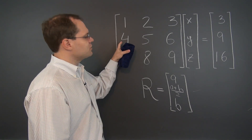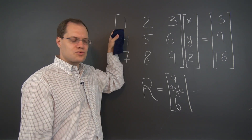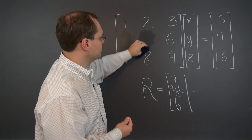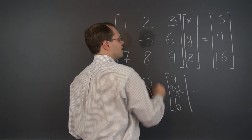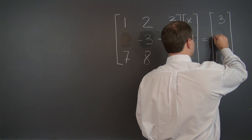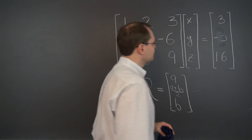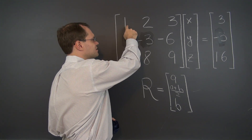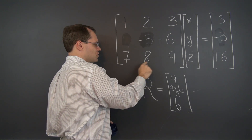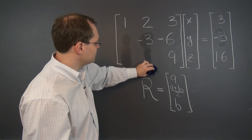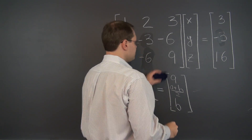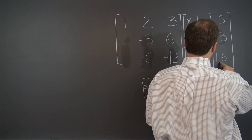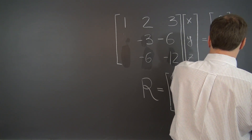Let's see what happens. The first operation is subtracting 4 of the first row from the second, resulting in 0, minus 3, and minus 6, and a minus 3 on the right-hand side. So far, so good — nothing foreboding about the system yet. The next step is subtracting 7 of the first row from the third, giving us 0, minus 6, minus 12, and minus 5 minus 21, which is minus 26, in that entry.